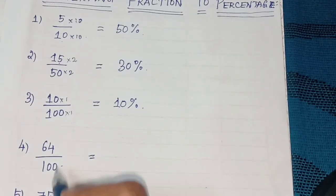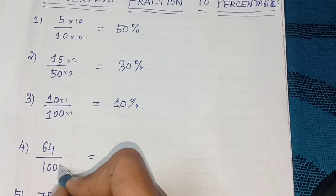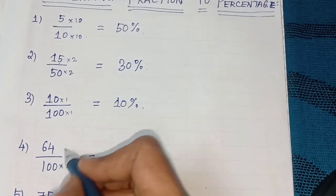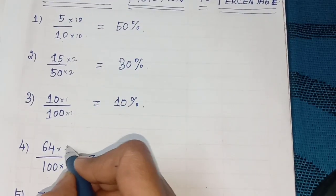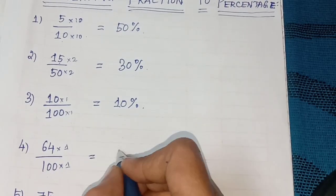Next, 64 by 100. Multiply by 1. Both denominator and numerator. So 64 into 1, 64 percentage.